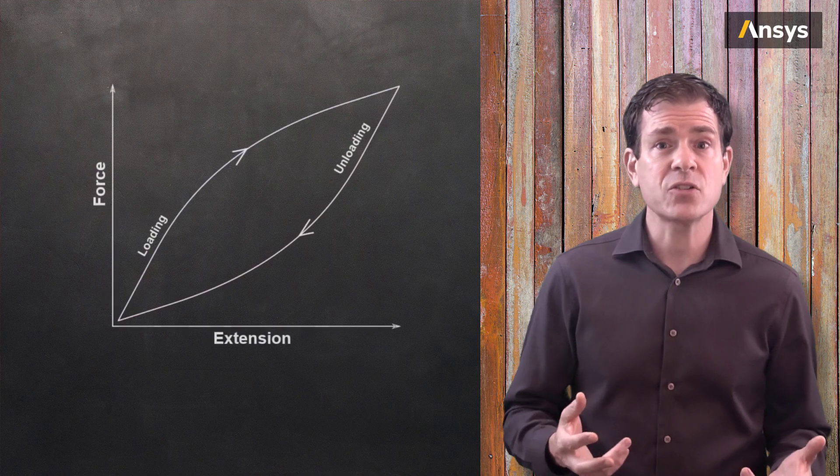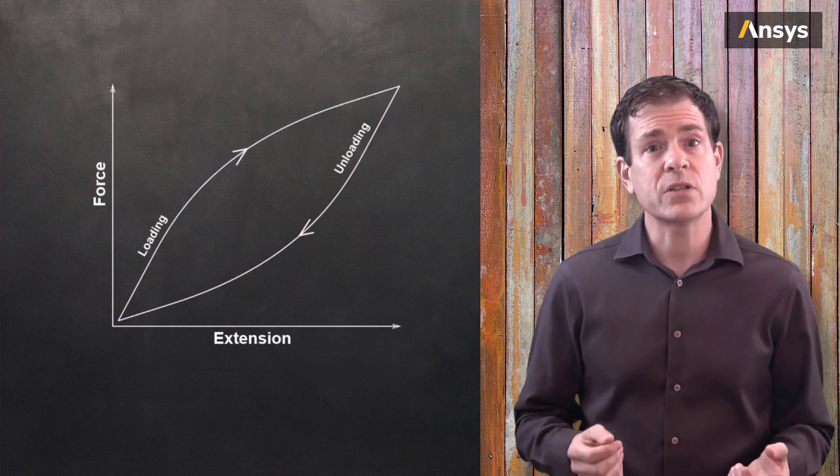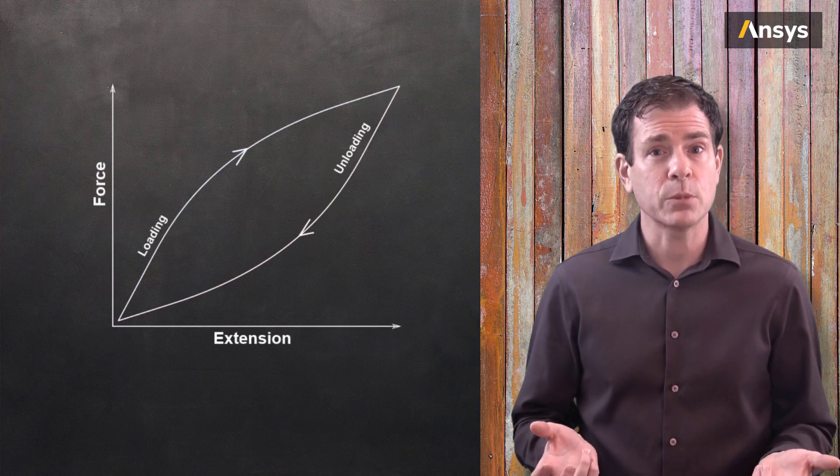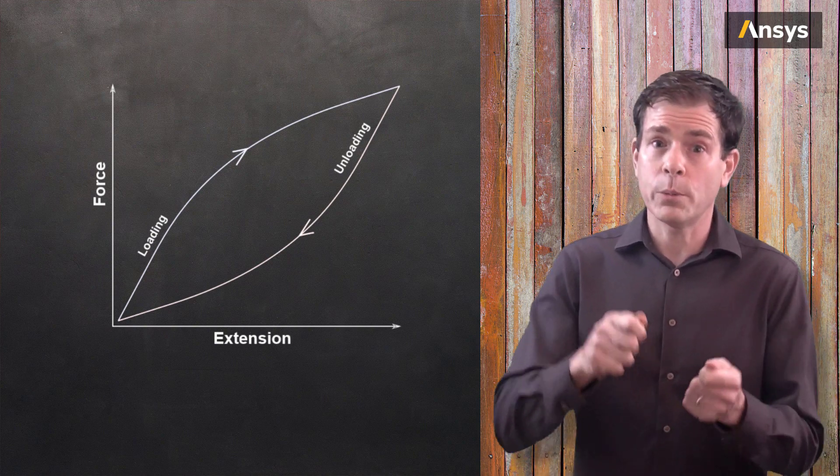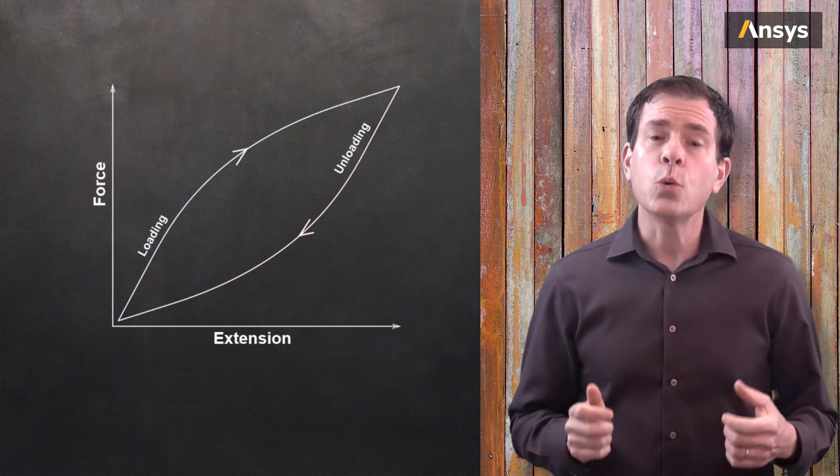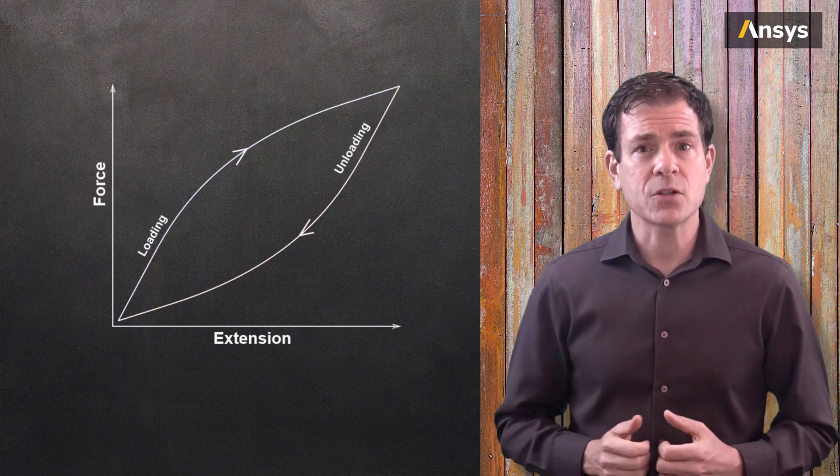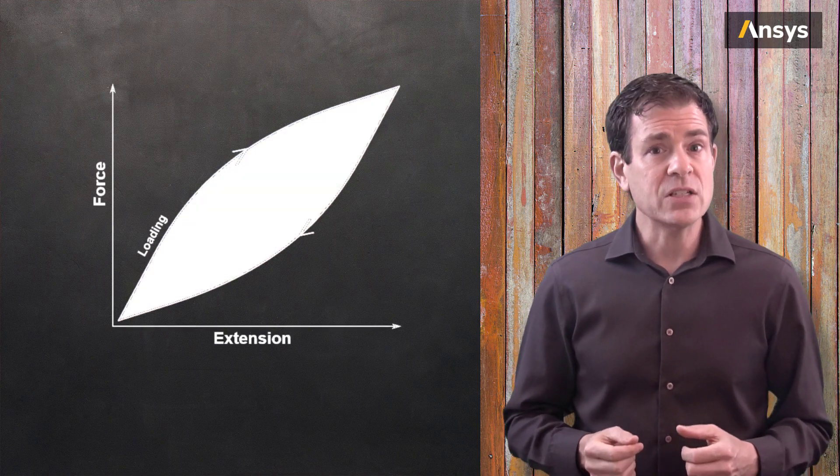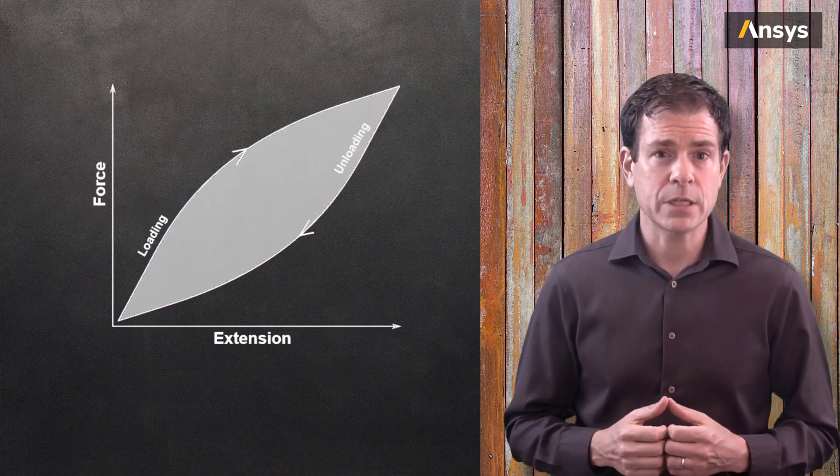If we plot the cyclic stress strain response, otherwise known as the hysteresis plot of a typical steel material from an experiment, where we pull and push on the material, we will see an area enclosed by these curves.